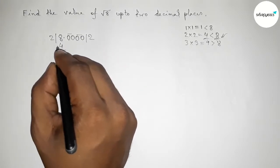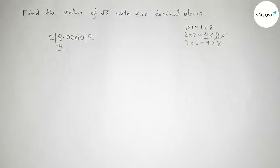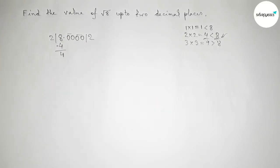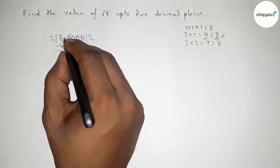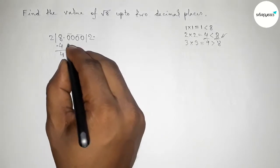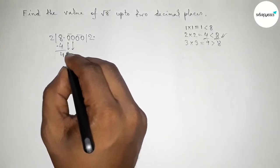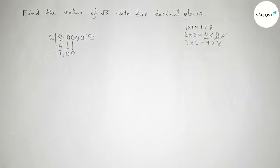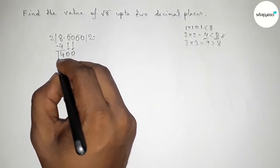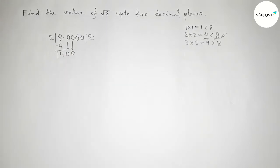Next, subtracting: 8 minus 4 gives us 4. This point will be placed here. Now write the first pair of zeros and draw a division line.